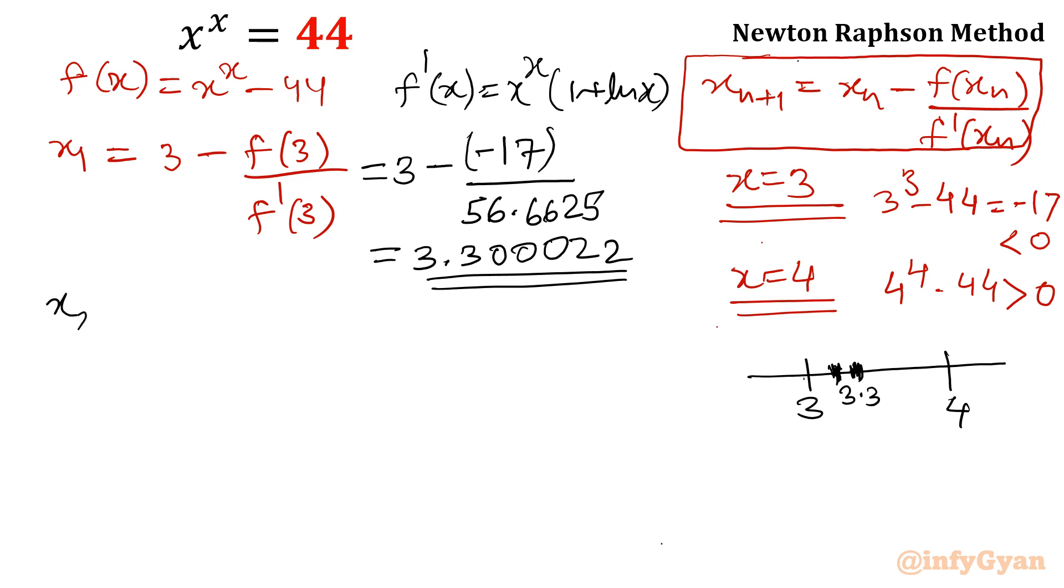So now second iteration. 3.3000022 minus f of same number 3.3000022 divided by f dash of 3.3000022. So that value is coming out 3.234262.